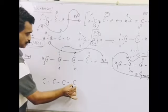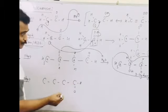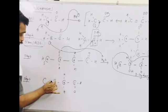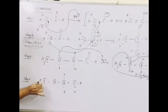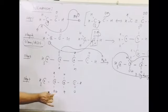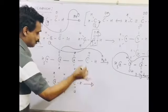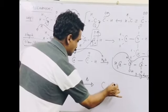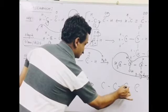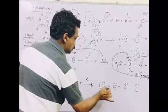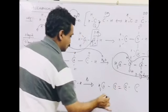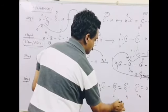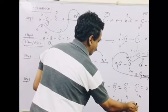In step four, 3-hydroxybutanal (carbon 1: CHO, carbon 2: two hydrogens, carbon 3: one OH and one H, carbon 4: CH₃) loses a water molecule upon heating. What we get is a four-carbon chain with a double bond between carbons 2 and 3, giving but-2-enal — an alpha-beta unsaturated aldehyde — as the final product.